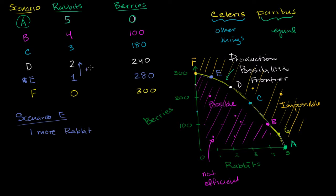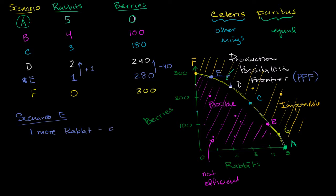What am I going to give up? So this is plus one over here. Well, I'm going to give up 40 berries. And you can see it visually right here. If I try to get one more rabbit, I can't go into this unattainable part right over here. I have to stay on the production possibilities frontier, sometimes abbreviated as PPF. But if I want one more rabbit, the production possibilities frontier drops off, and I will have to give up 40 berries. So one more rabbit means I have a cost — I have to give up, on average, 40 berries.